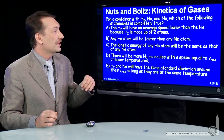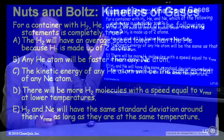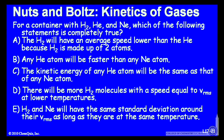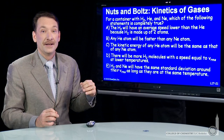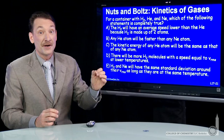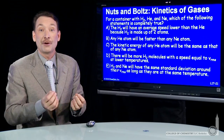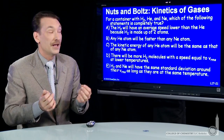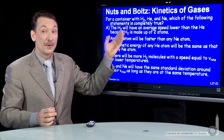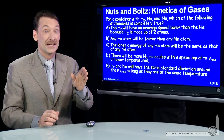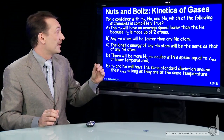So let's look at each of these. Statement A: the hydrogen will have an average speed lower than the helium because hydrogen is made up of two atoms. We know from our discussion it's the mass of the particle, not the structure of the particle, that determines speeds. So A contains an incorrect statement.